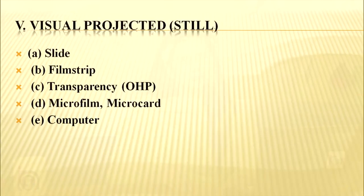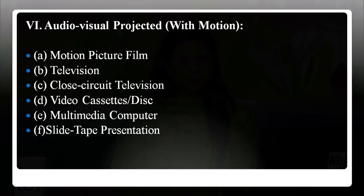The fifth category is visual projected (still), which includes slides, film strips, transparencies, overhead projectors, microfilm, microcard, and computers. The last category is audio-visual projected (with motion), which includes motion picture film, television, closed-circuit television, videocassettes or discs, multimedia computers, and slide-tape presentations.